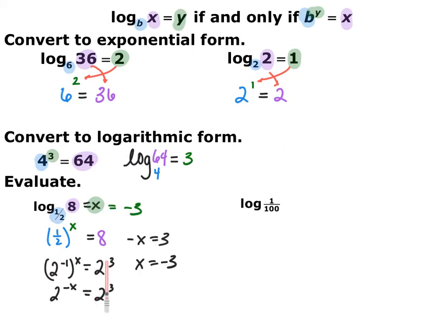This is a problem like we did in the previous section. I made both sides base 2: one-half is the same as 2 to the negative 1 power, so one-half to the x is 2 to the negative x. And 8 is 2 cubed. So 2 to the negative x equals 2 cubed. Since the bases are the same, the exponents are equal: negative x equals 3, so x equals negative 3. What do I have to raise one-half to to get 8? I raise it to the power of negative 3.